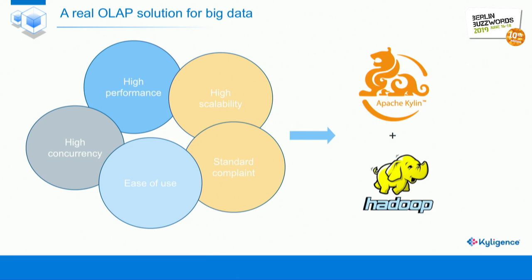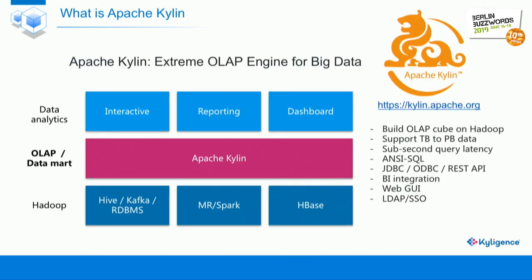We propose to develop a new OLAP engine on top of Hadoop. We call it Apache Kylin. This project was originated at eBay. This diagram shows the position of Apache Kylin — it runs on top of Hadoop and connects with your BI tools, your dashboards, and your reporting. The core concept in Apache Kylin is using OLAP cube technology. It can support a very large data scale from TB to PB, while the overall latency can be controlled at the sub-second level.